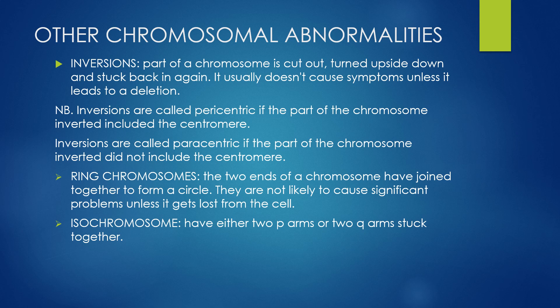We have two types of inversions. A pericentric inversion happens when the part of the chromosome that was inverted included the centromere. A ring chromosome occurs when the two ends of a chromosome come together to form a circle; it usually does not cause significant problems unless parts of the chromosome are lost. An isochromosome occurs when two p-arms or two q-arms of a particular chromosome get stuck together.